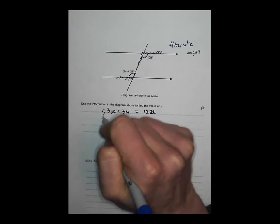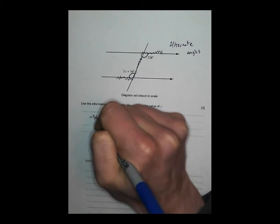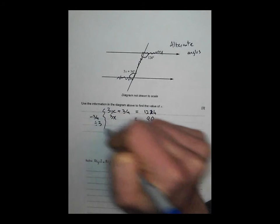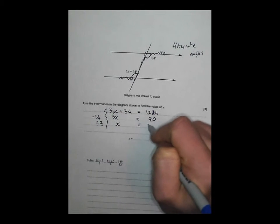And there, we've got a nice little equation there. That angle there must be equal to that angle there. So now we can solve it to find our value of x. So I'm going to take 34 from both sides, and I'm going to be left with 3x is equal to 90. And I'm going to divide by 3, and I'm going to get x is equal to 30 degrees.